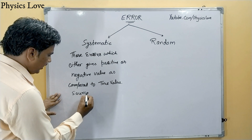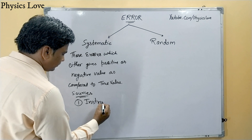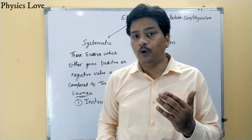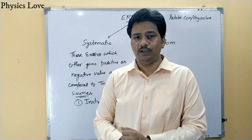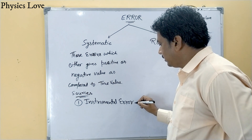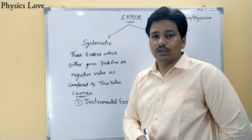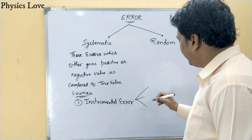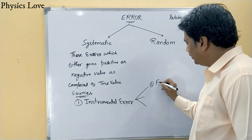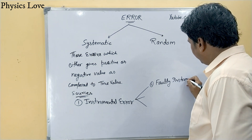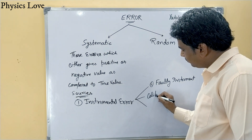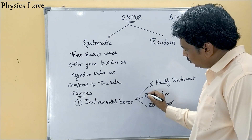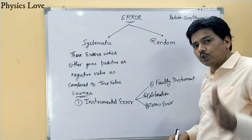The first source of systematic error is instrumental error. As the name suggests, if the instrument is faulty, it may cause instrumental error. The three causes of instrumental error are: first, faulty instrument design; second, improper calibration; and third, zero error. These are the three basic causes of instrumental error.